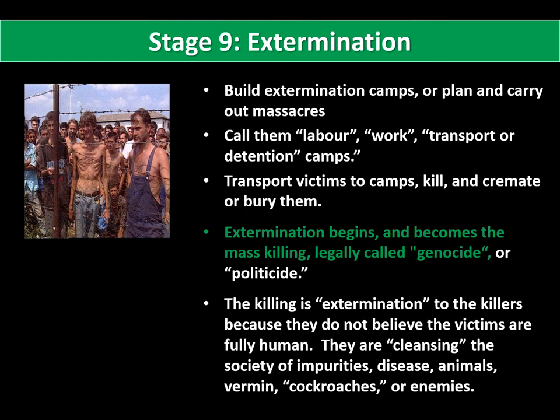Stage nine is extermination itself. We don't call it mass murder, although that's exactly what it is. Extermination plays into the hands of the perpetrators — the word is like 'cleansing', getting rid of impurities or disease or animals, like you would with a cockroach or an insect that you want to get rid of. So this act of murder, this extermination, is the ninth stage: the killing of the target group. In Bosnia, this was Bosniak Muslims; and it was Jews during the Holocaust.